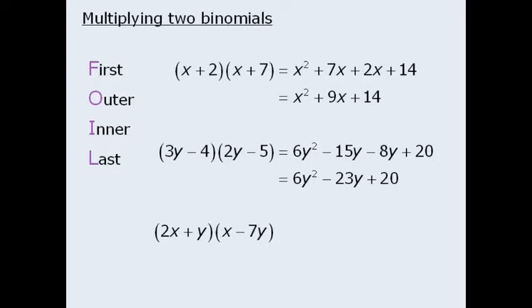Okay one more example. First we'll multiply the first terms to get positive 2x squared. Then we'll multiply the outer terms to get negative 14xy. Then we'll multiply the inner terms to get positive xy. And finally we will multiply the last terms to get negative 7y squared. To simplify we combine these two like terms to get negative 13xy.